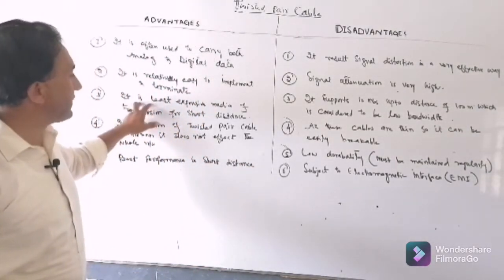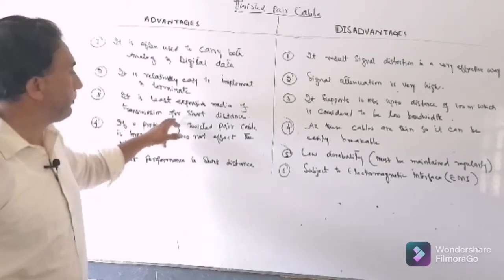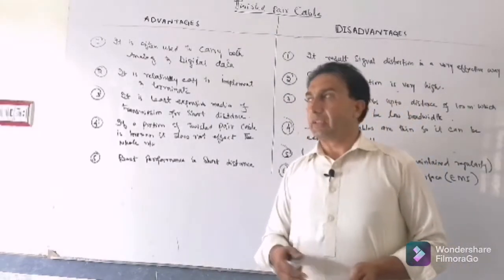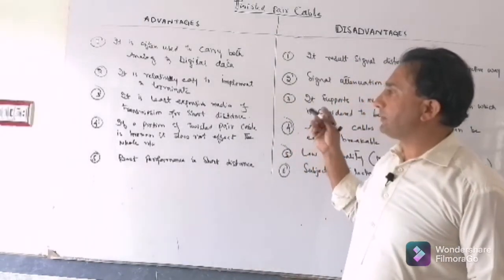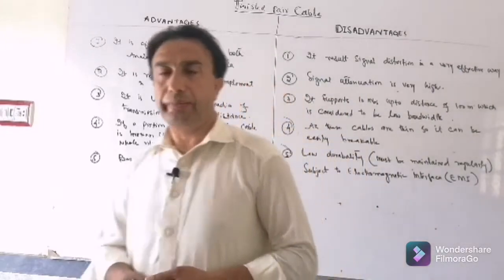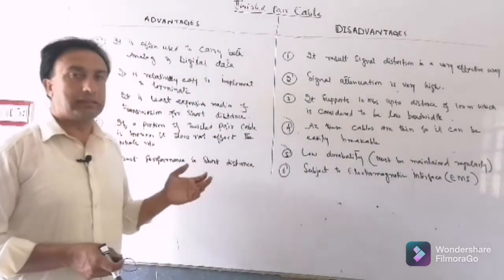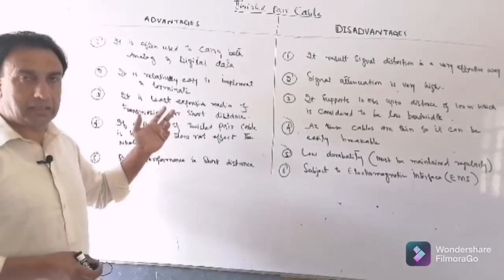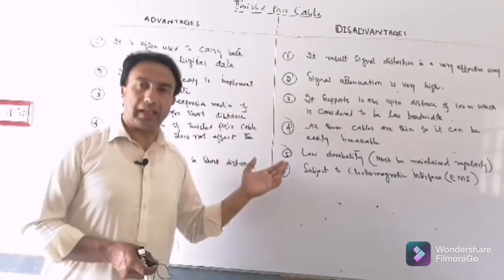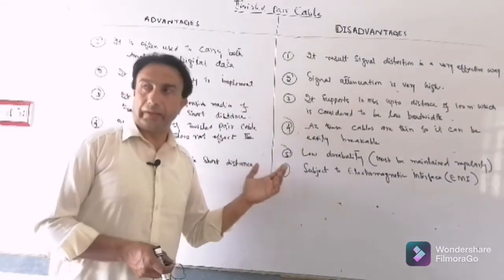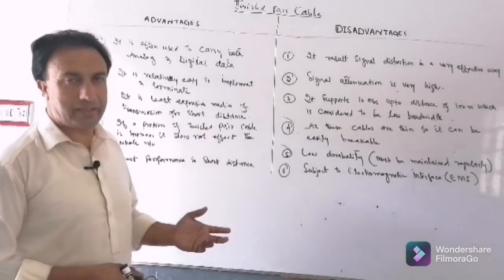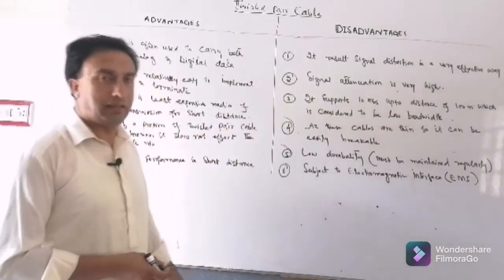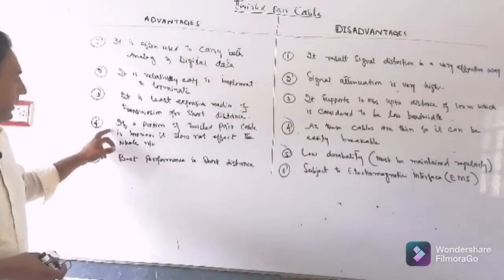Third, it is the least expensive media of transmission for short distance. As far as short distance is concerned, the twisted pair cable is the least expensive media as compared to the other physical media. It is less expensive as compared to the coax cable and optical cable.